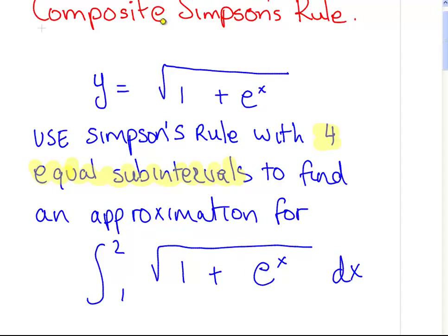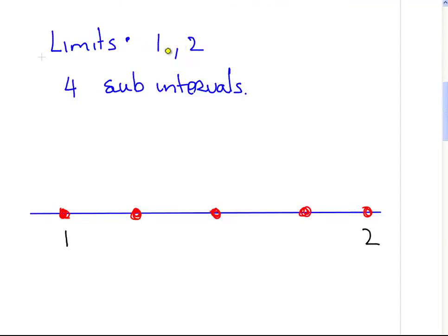Okay, something to note here is our interval. The boundaries of this interval, the limits are 1 and 2. So let's just look at this interval here and look at the four subintervals. So the limits, 1 to 2, and we have four subintervals, so we have the number line here, 1 and 2.